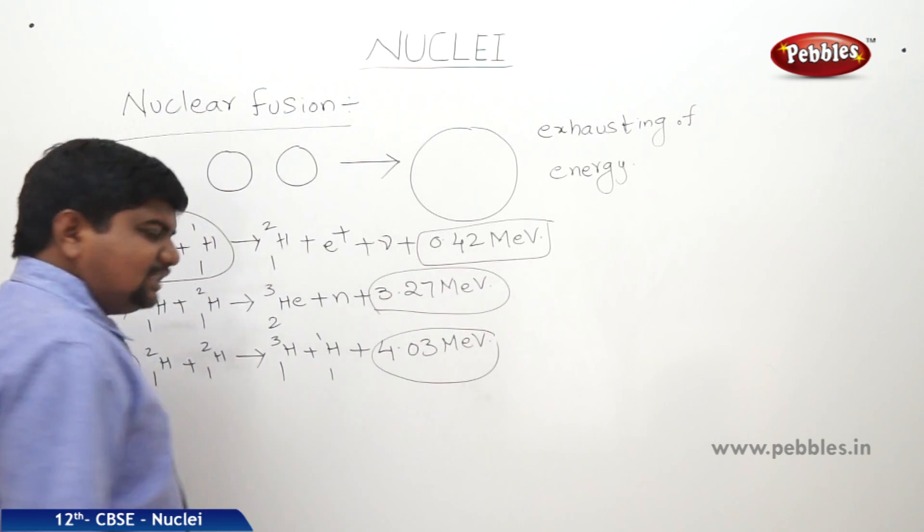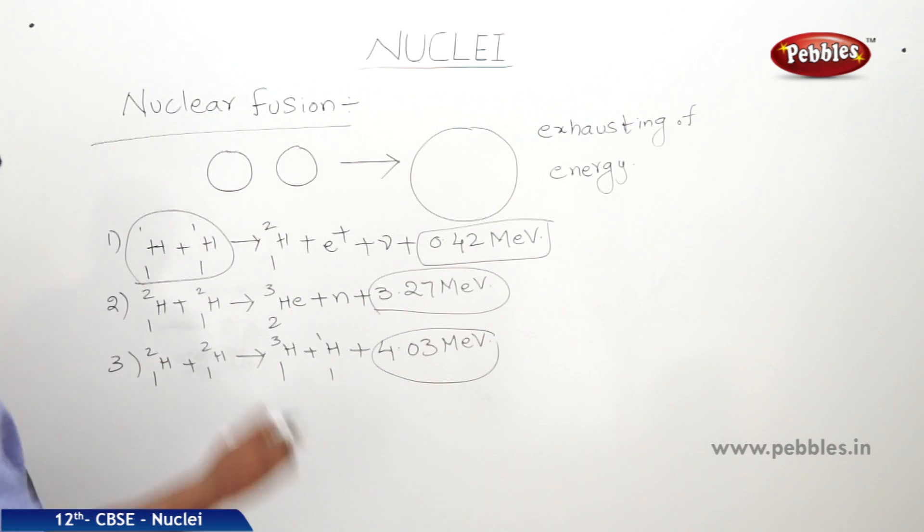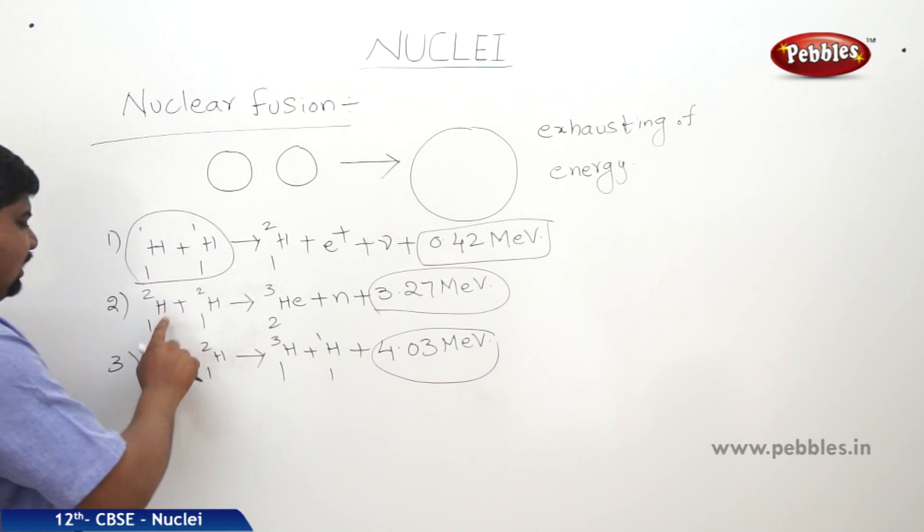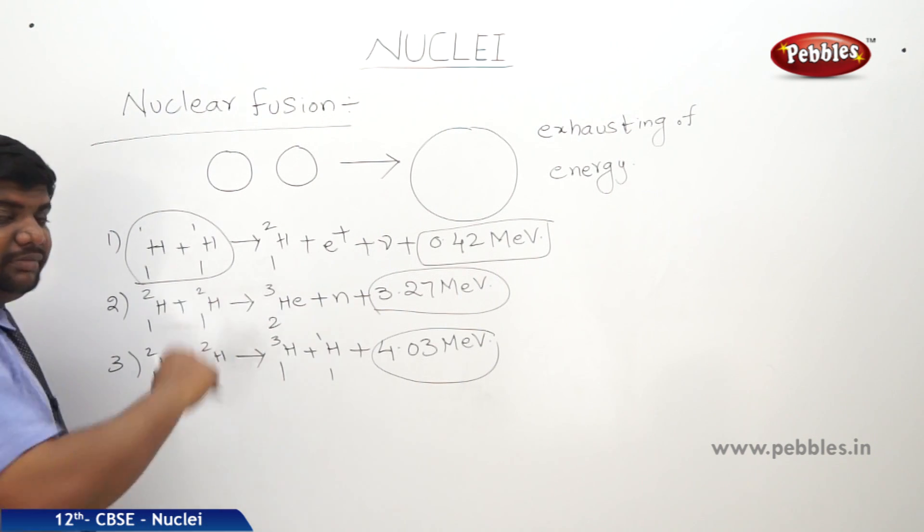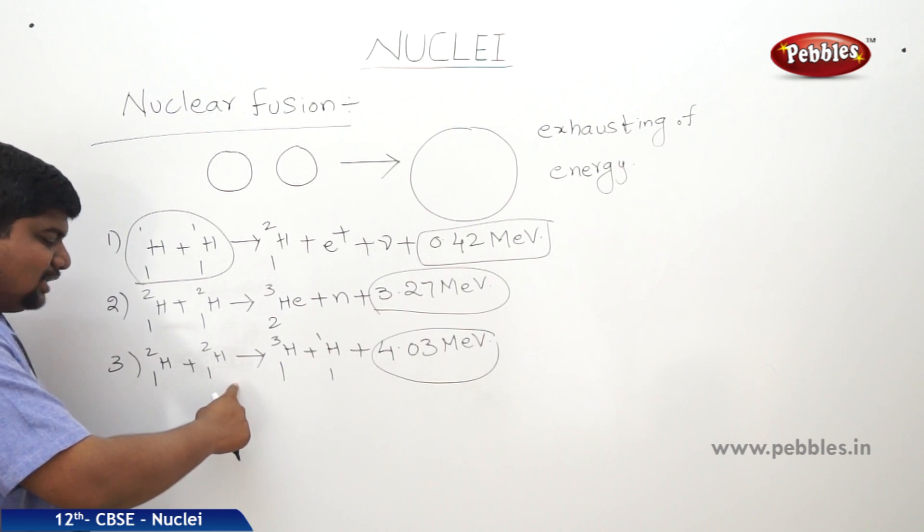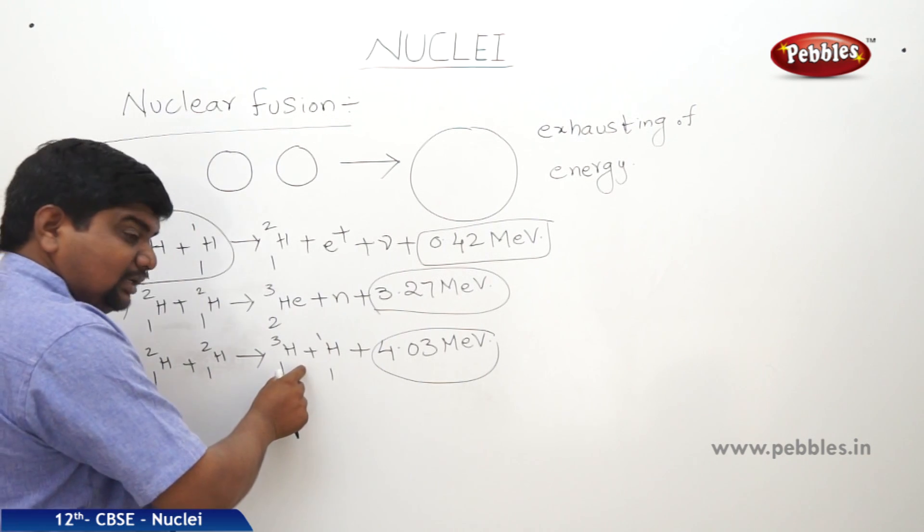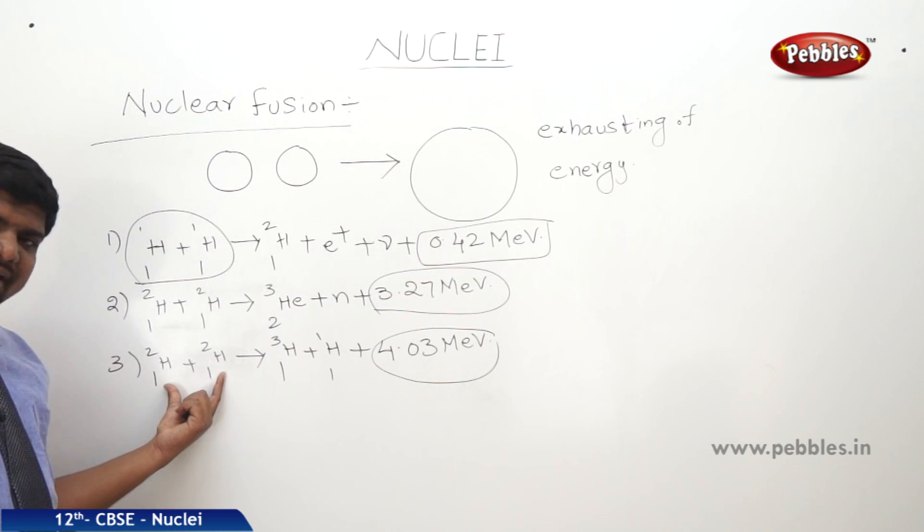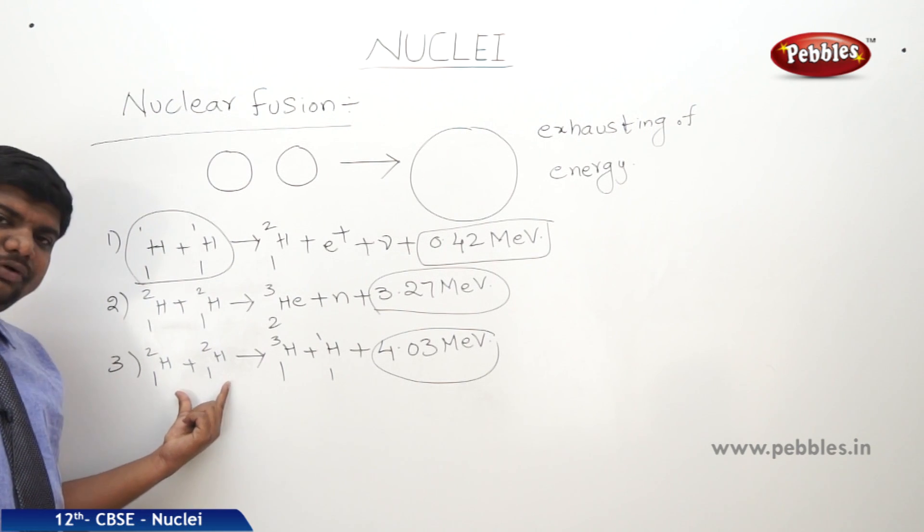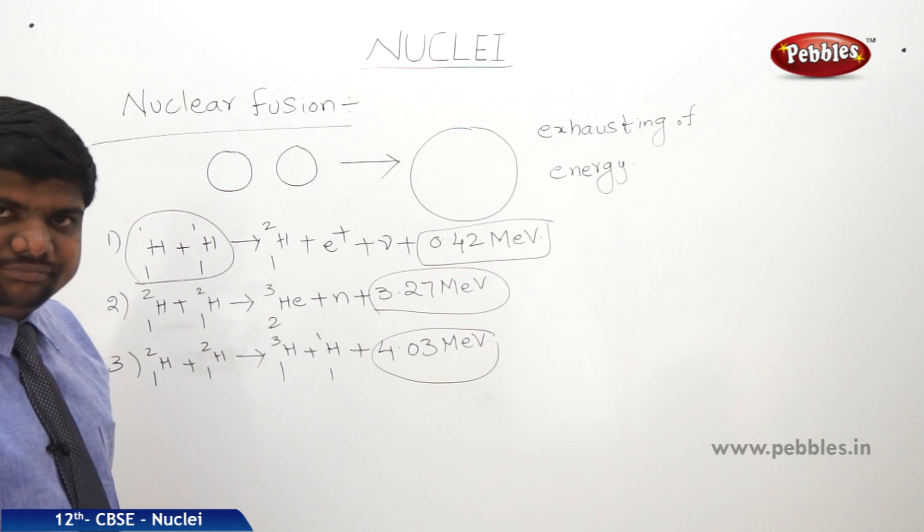We can understand one thing by seeing the reactions. Here 1H1 and 1H1, only one proton. Two deuterium nuclides are combining to form a helium nucleus. Here also, two deuterium nuclides are combining to form tritium plus hydrogen. If these are two same type of nuclides, there is a force of repulsion between them.